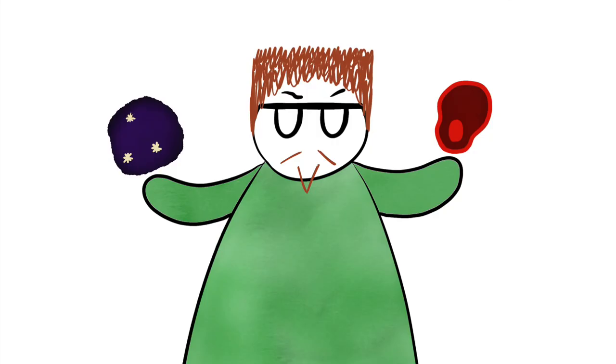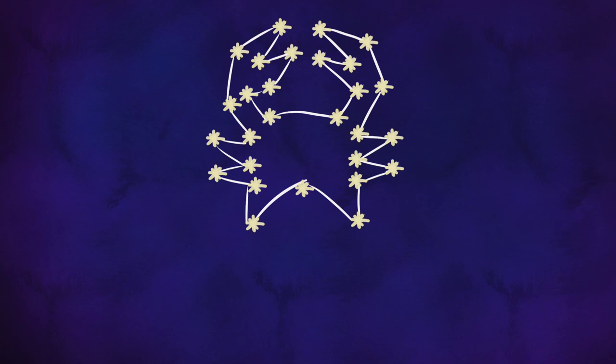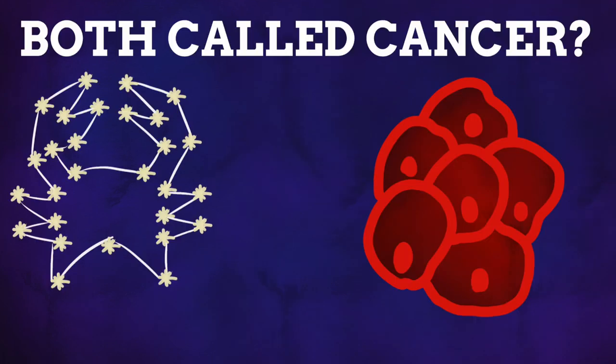Why on earth am I talking about star signs and diseases? While these two things might seem completely unrelated, there is of course something that ties them together. That being the name for the star sign for those born between June 21st and July 23rd, which is of course called cancer. So how on earth did cancer end up becoming the name for the star sign we are currently under and an awful, awful disease?